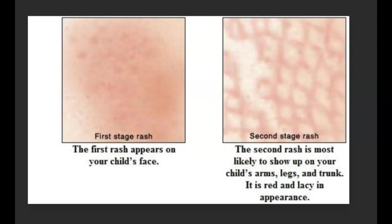Patients with sickle cell disease or beta thalassemia are at risk for anemia or an aplastic crisis. Patients with a poor immune system are also at risk for anemia. Under therapeutic management, the disease is usually benign and self-limiting, and treatment is symptomatic and supportive.